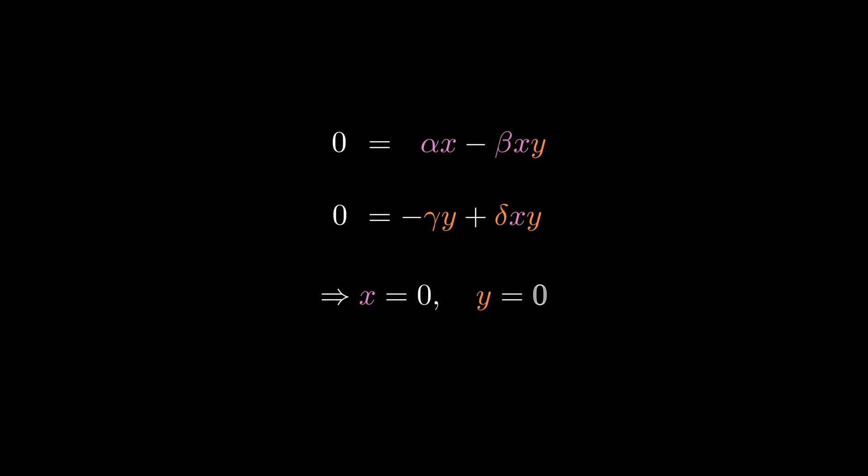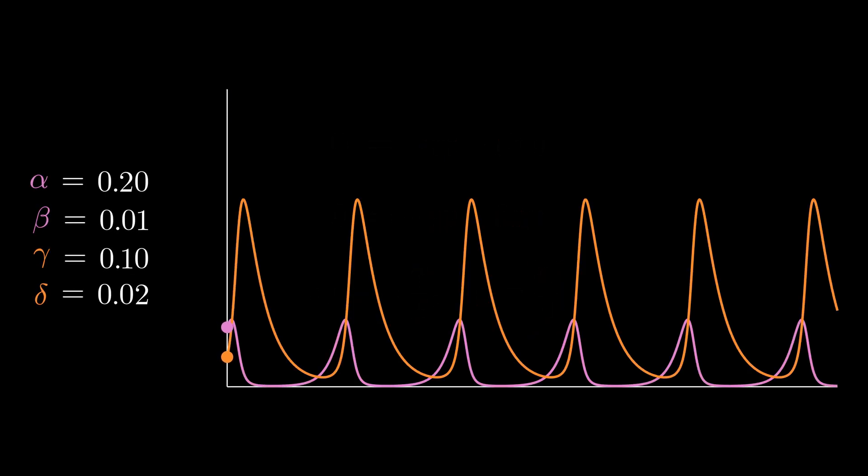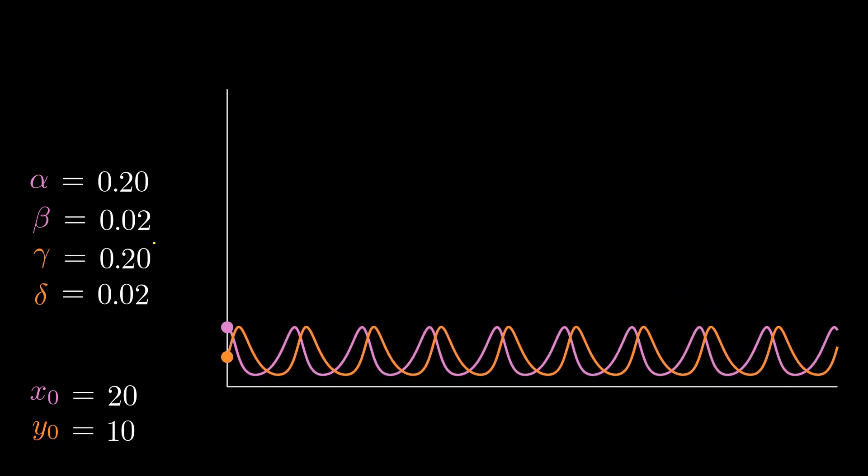Instead, the second case is more interesting with this solution. We see that x is only dependent on parameters from the predator equation and y only on parameters from the prey equation. When we again look at the graph we can see how this equilibrium behaves. We tune alpha over beta to become 10 and gamma over delta to become 20 which results in the whole system stabilizing at those constant values.